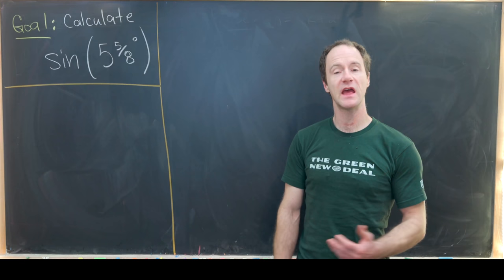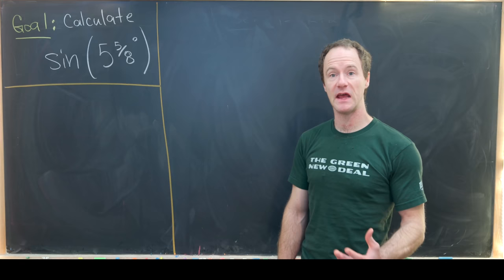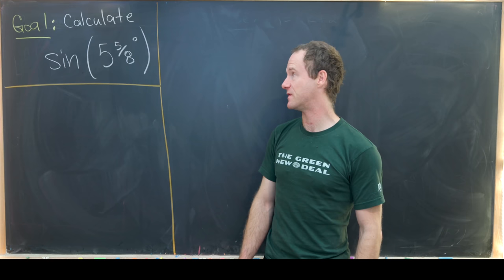Here I've got a funny little calculation of a trig value for a seemingly random angle. In particular, we will calculate a closed form for sine of 5 and 5 eighths degrees.